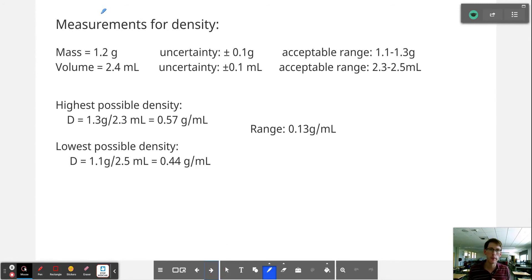So let's say that we're trying to determine density of something. We take the measurement of its mass and we find that it's 1.2 grams, and we take the measurement of its volume and we find that it's 2.4 milliliters. This is just using the equipment that we have.